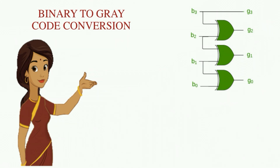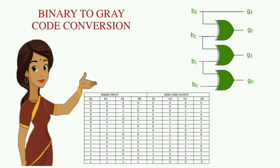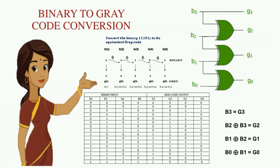First let us see the binary to gray code converter. Binary to gray code is an ordering of the binary numeral system such that two successive values differ by only one bit. In this example, the binary value given is 1101, which is converted to its corresponding gray code. The first bit is retained as such.